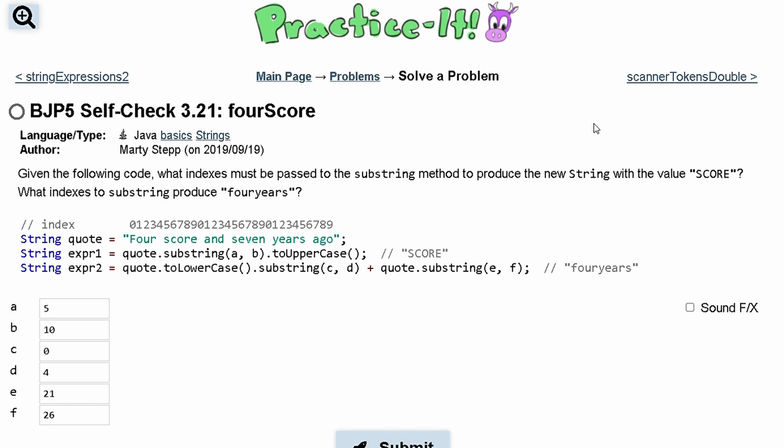For Practice-It check 3.21 fourScore, we're given the following code and we are asked what indexes must be passed to the substring method to produce the new string with the value score and the substring fouryears.